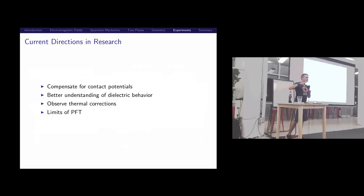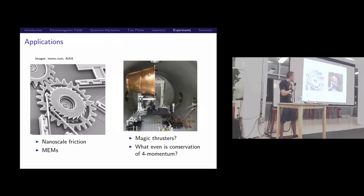We want to figure out how to compensate for thermal corrections, figure out the limits of the proximity force theorem, and compensate for the potentials of voltage. But it looks like the effect is real. In fact, if you take like 100 micron scales you get in micro-electric machines, the force from the Casimir effect is like on the order of an atmosphere. It's the dominant force at small scales. Things will stick to each other just because of Casimir effects.